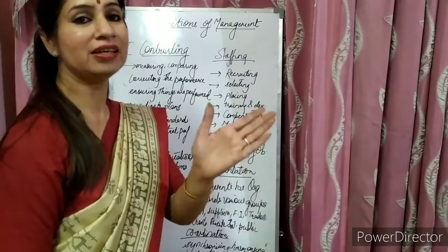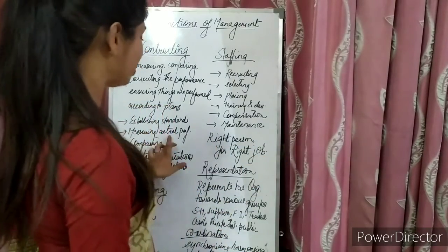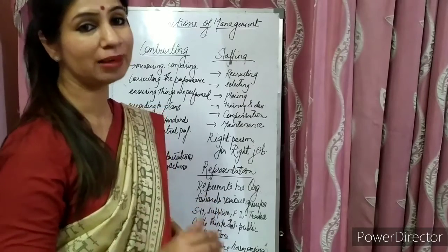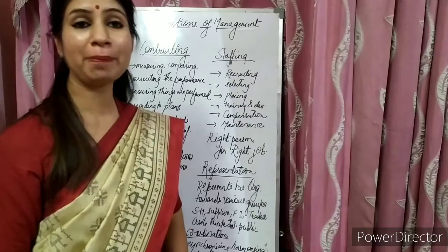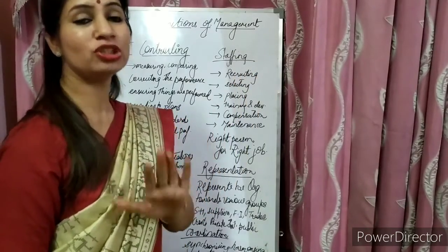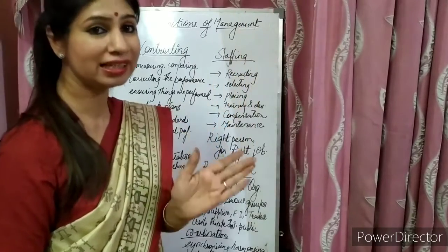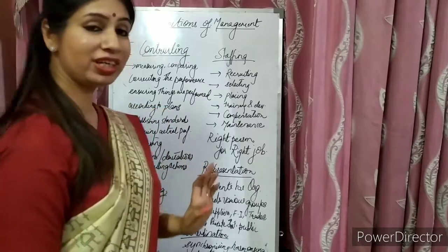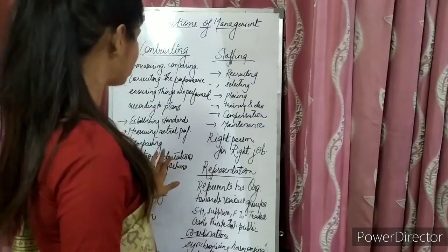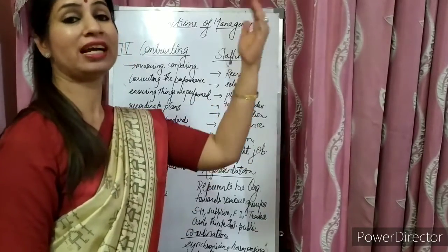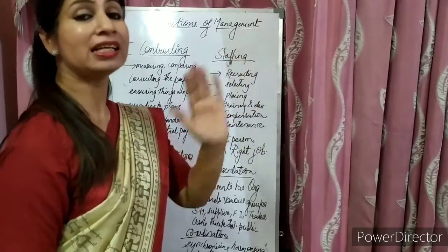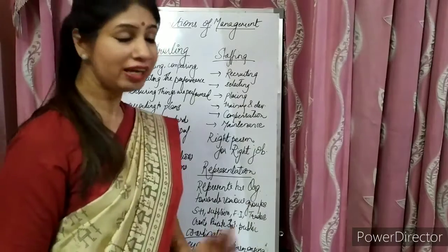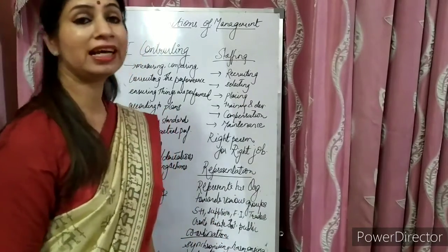Next is measuring actual performance. After setting standards, the actual performance of employees is measured. Then comparing: the actual performance is compared with the standard performance to find any variations, differences, or deviations. If there are deviations, they are found out, and lastly, corrective actions are taken.